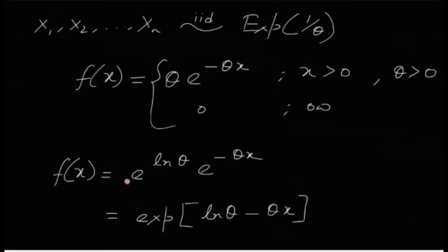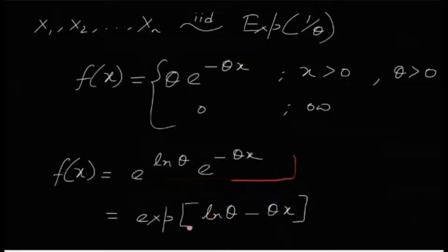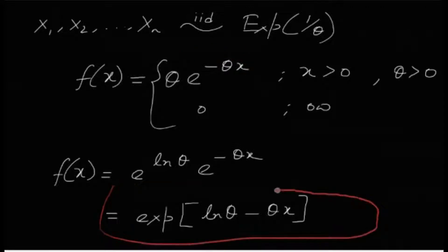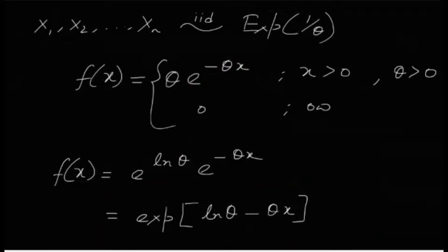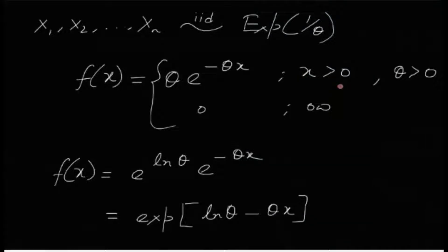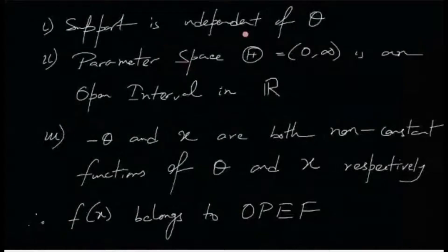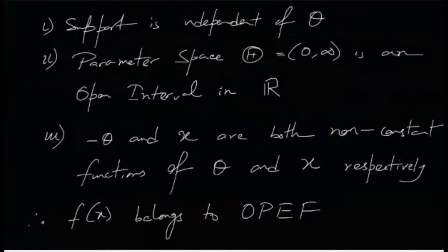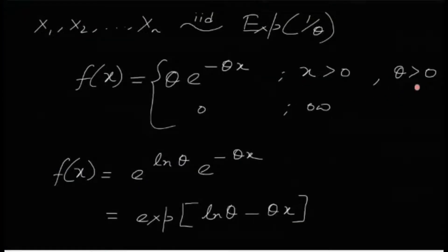Now this f(x) can be written as e^(ln θ)·e^(−θx), which in turn can be written as e^(ln θ − θx). So this PDF is entirely in the form of e raised to some power. Now see the support of the distribution — the set on which the PDF is positive — is x greater than 0, which is independent of θ. The support is the set of positive real numbers, so it is independent of θ.